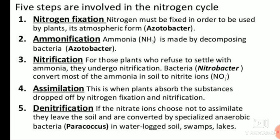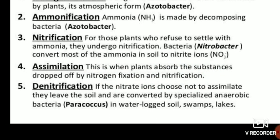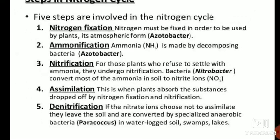Fourth: assimilation. This is when plants absorb the substances produced by nitrogen fixation and nitrification. Fifth: denitrification. If the nitrite ions (NO₃⁻) choose not to assimilate, they leave the soil and are converted by specialized anaerobic bacteria in waterlogged soil, swamps, and lakes.